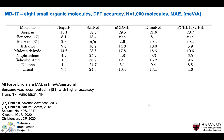The first dataset we benchmark NEQUIP on is MD17, consisting of eight small organic molecules computed at DFT accuracy, specifically the 1,000-training-sample subset. We compare NEQUIP to SchNet (invariant GNN), SGDML (kernel-based), DimeNet (invariant GNN leveraging two- and three-body information), and FCHL-19 with a Gaussian process model. NEQUIP consistently outperforms SchNet, SGDML, and DimeNet — performing on par with DimeNet on only one out of eight molecules — and performs roughly on par with FCHL-19.